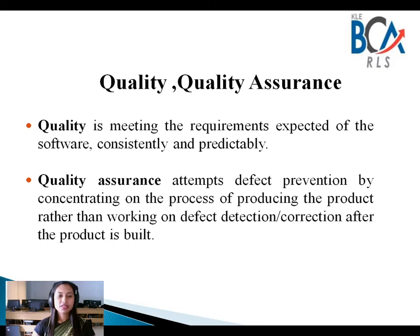Let us start with what is quality. In general, whenever we want to buy anything, we will always look for a good quality product. In the same way, in software also, you want the software to be of good quality. A basic definition of quality is a system of maintaining the standards in manufactured products by testing a sample of output against the specification. A quality product is whatever we expect the product to do, it should be doing it — meeting the requirements expected of the software consistently and predictably.